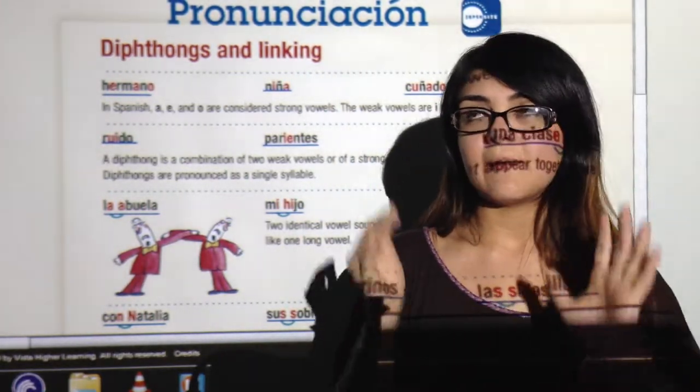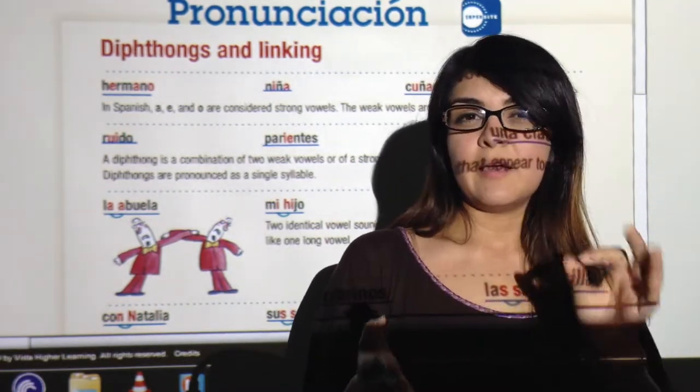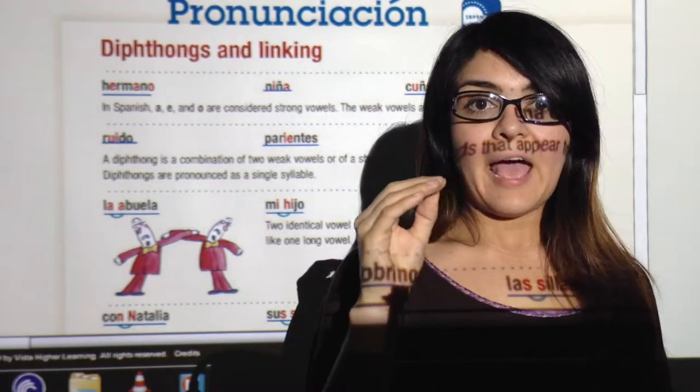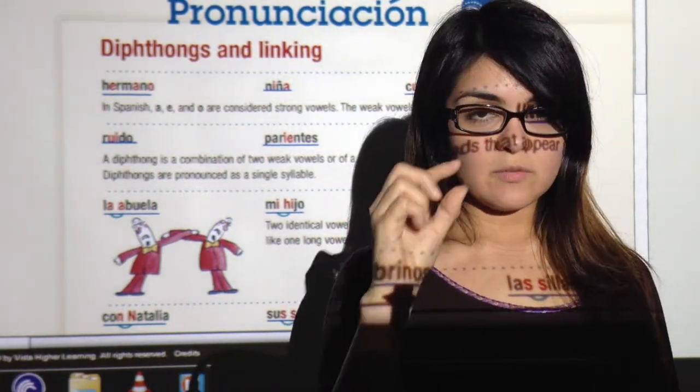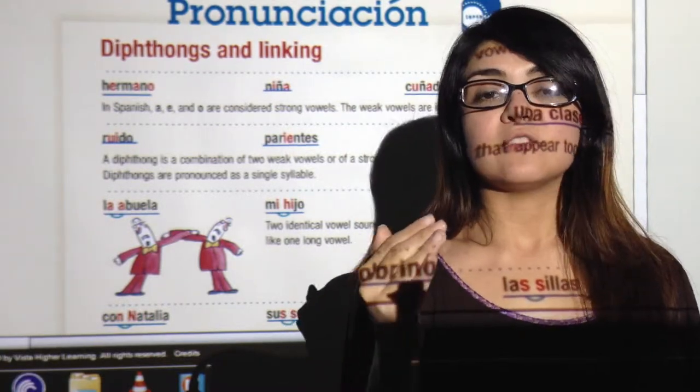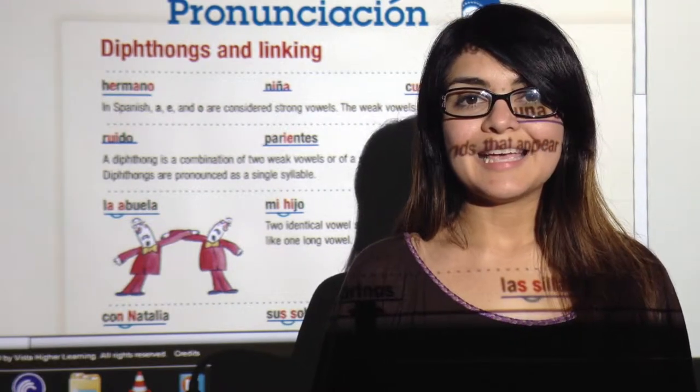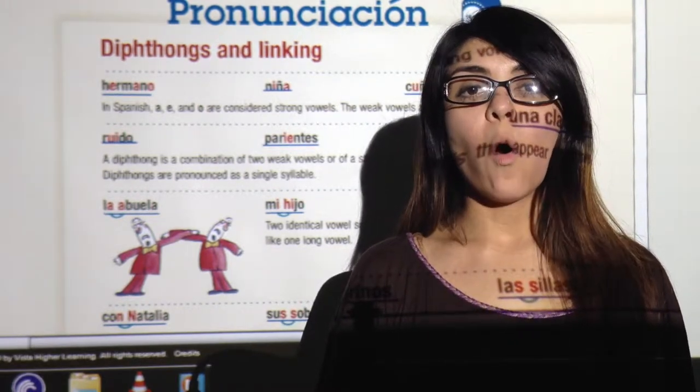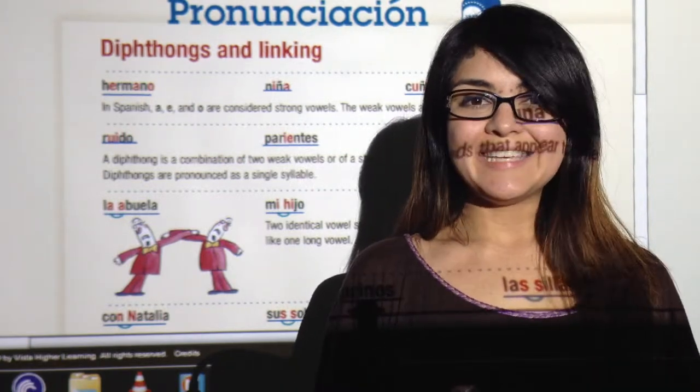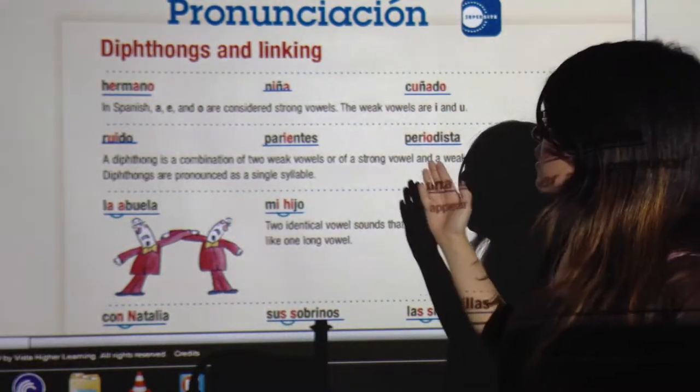We already know that in Spanish we have strong vowels and weak vowels. So remember that when I pronounce the weak vowels my mouth will look closer, closed. And when I pronounce the strong vowels my mouth is wider. A, E, I, O, U. So you know, I and U are the weak vowels.